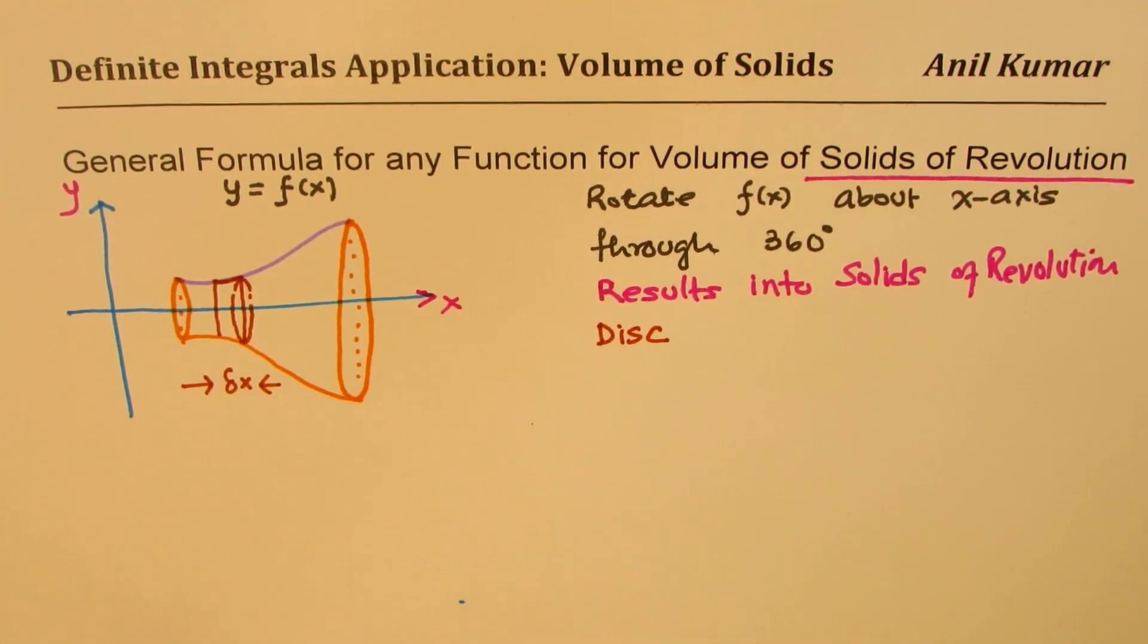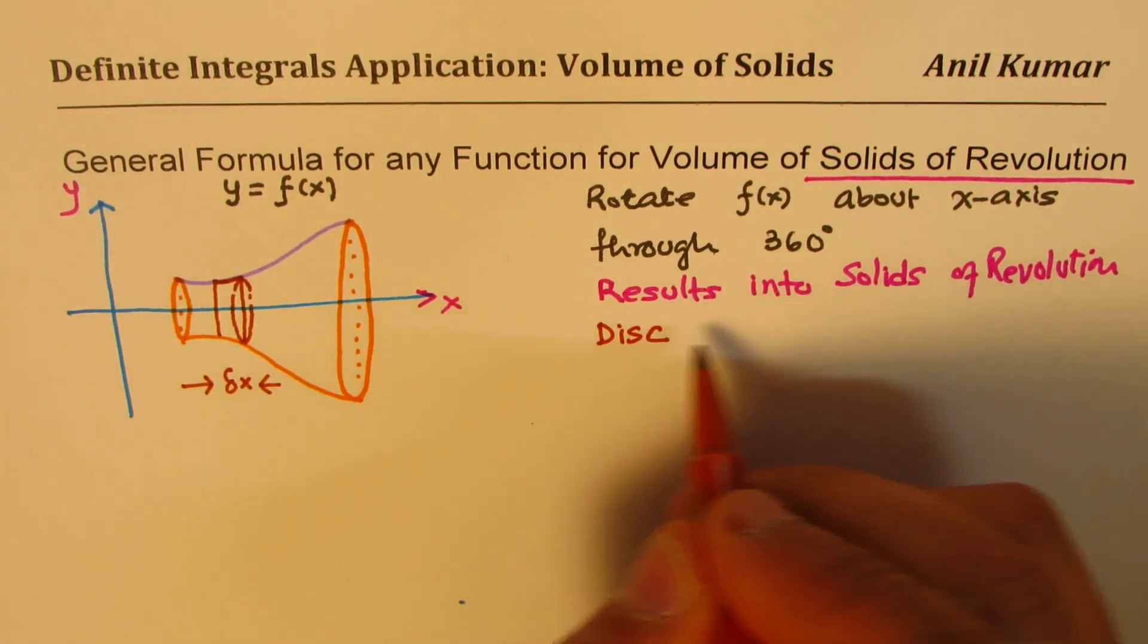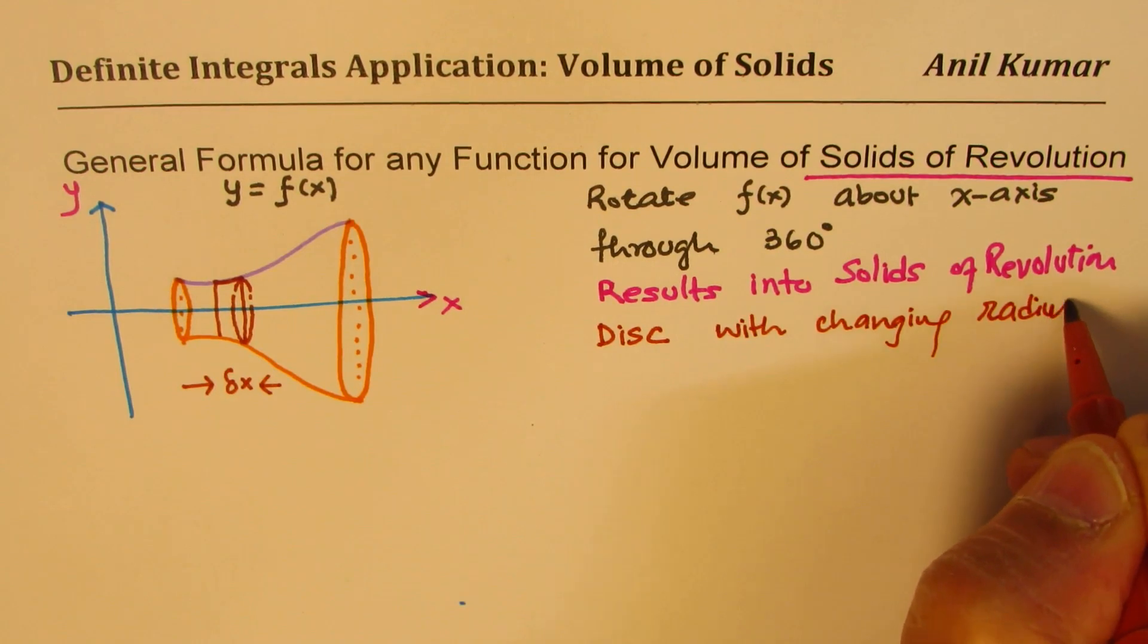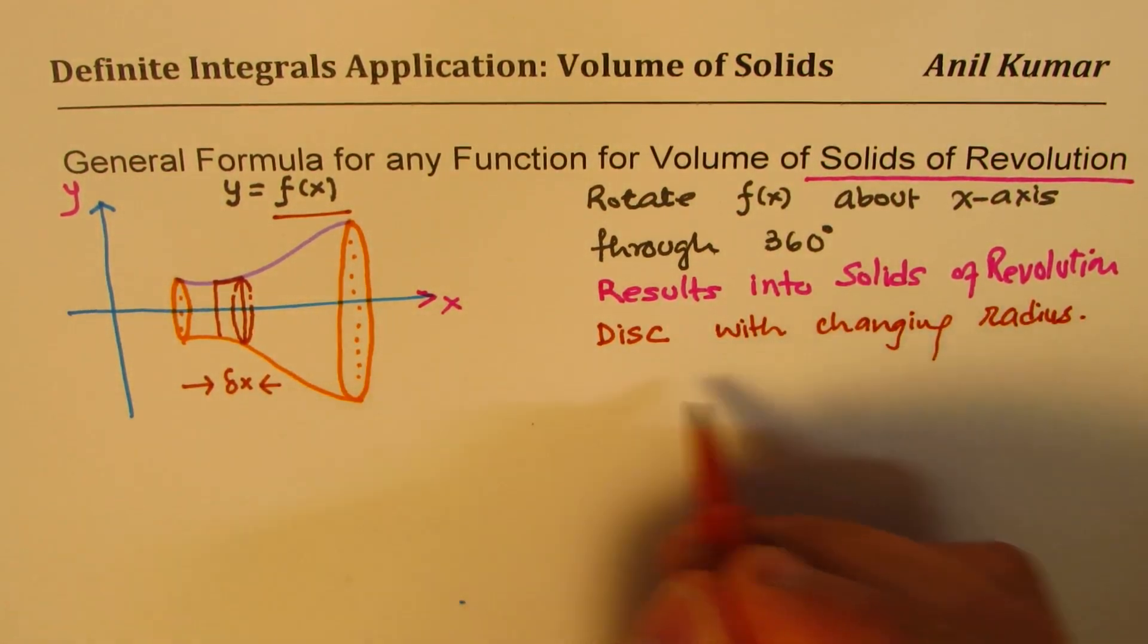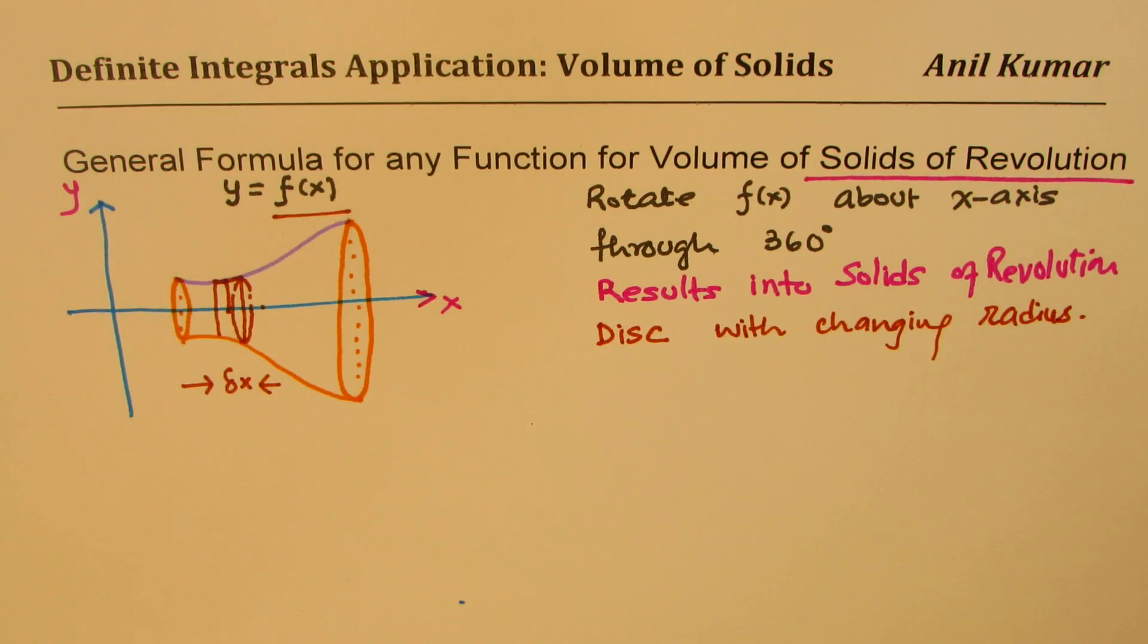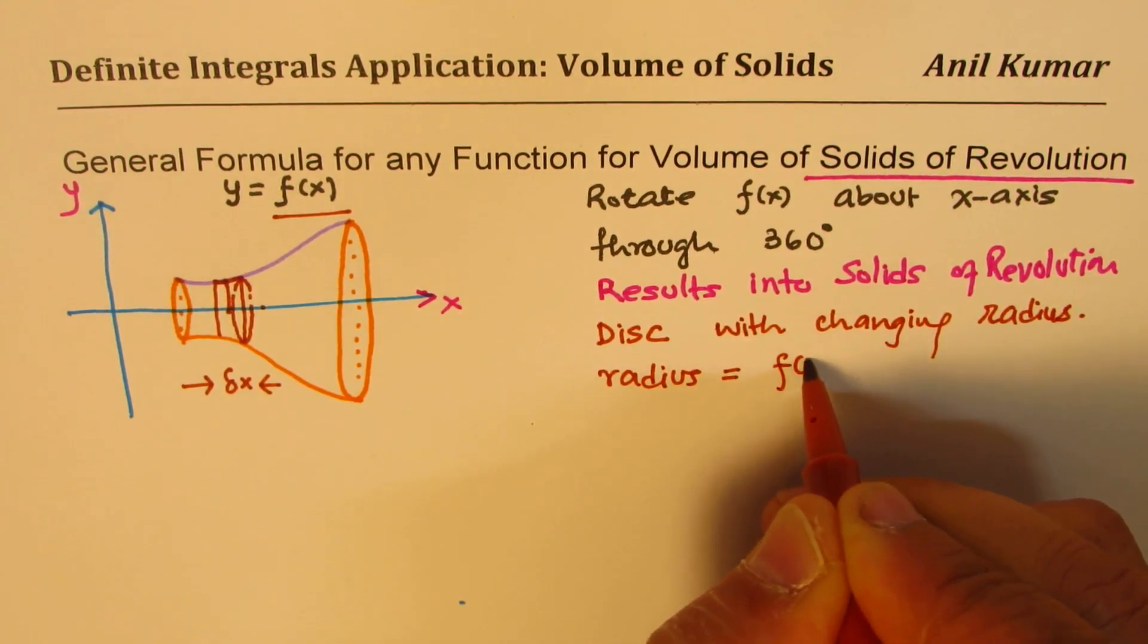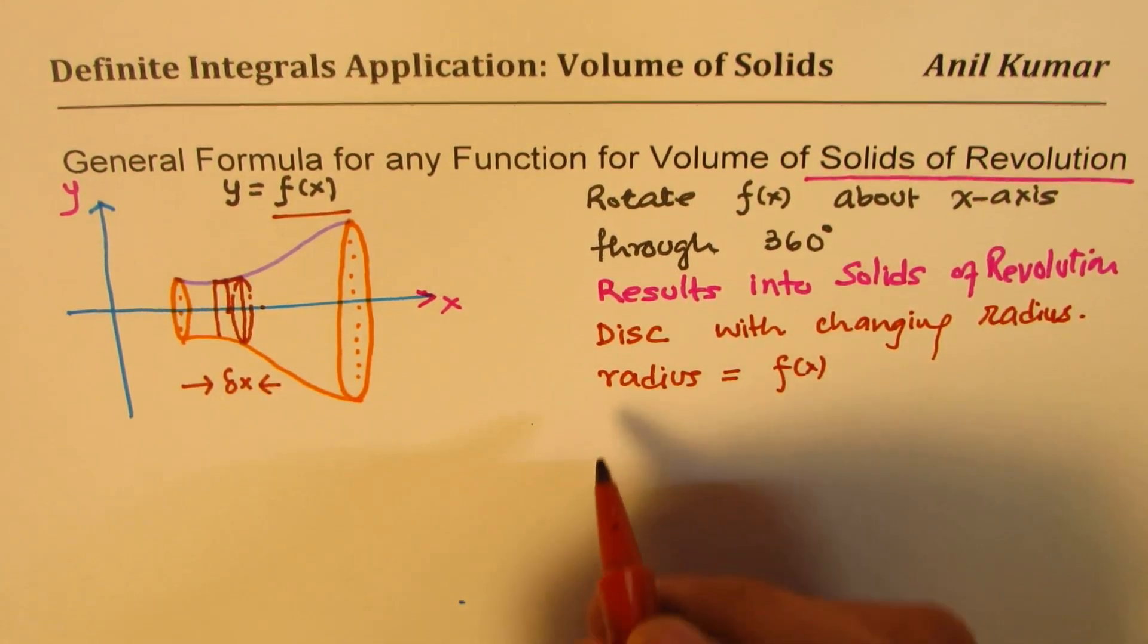So we get disks with varying height, or radius in this case. We get disks with changing radius. Now this change in radius can be related to the function, which is the same as the value of the function. So if this is the radius of the disk, that is actually the value of the function. The radius of this disk can be associated with the value of the function itself, and the width is delta x, which is very small.